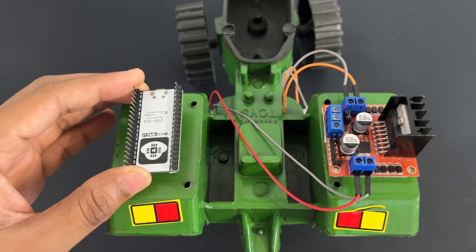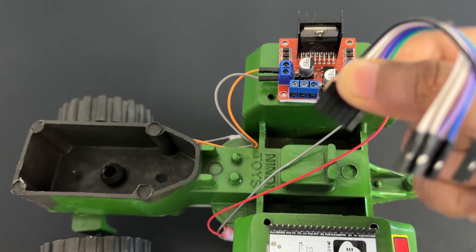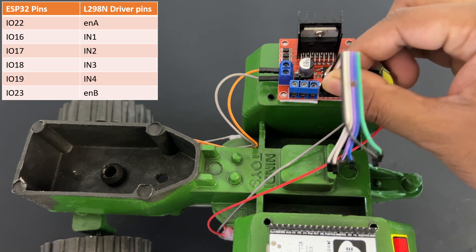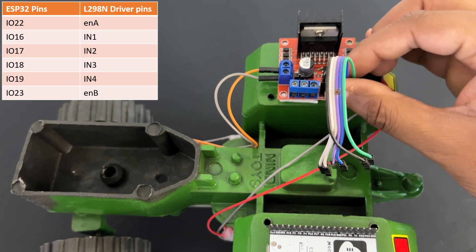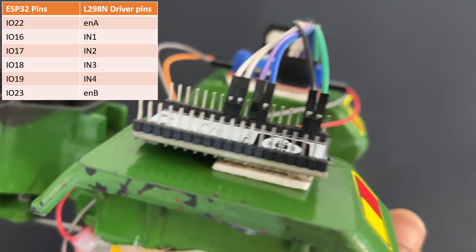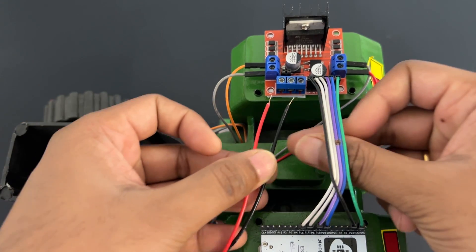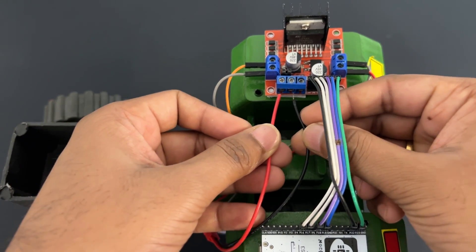Fix ESP32 module on chassis using double sided tape. Now connect L298N motor driver module to ESP32 pins as per table. Attach DC battery power connectors to motor driver module to plus 12 volt pins and ground pins.